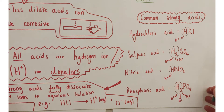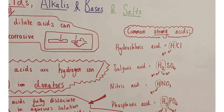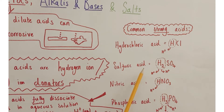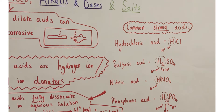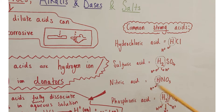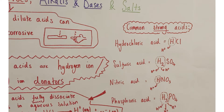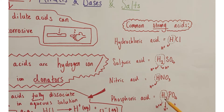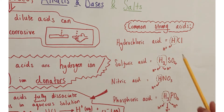Some common named acids to remember: hydrochloric acid (HCl) loses one hydrogen ion per molecule; sulfuric acid (H2SO4) releases two hydrogen ions per molecule; nitric acid (HNO3) releases one hydrogen ion per molecule; and phosphoric acid, with the phosphate ion PO4³⁻ combined with three hydrogens, can release three hydrogen ions per molecule. These are all examples of mineral acids or strong acids.